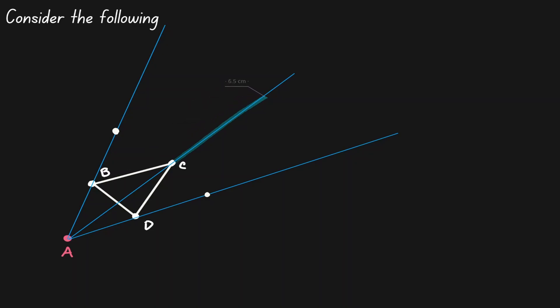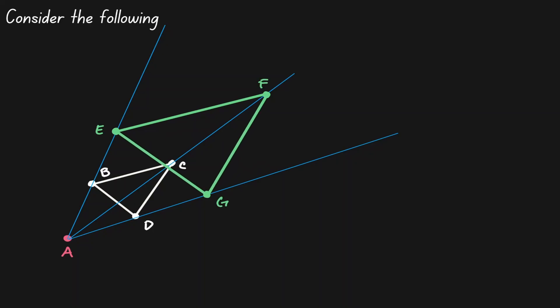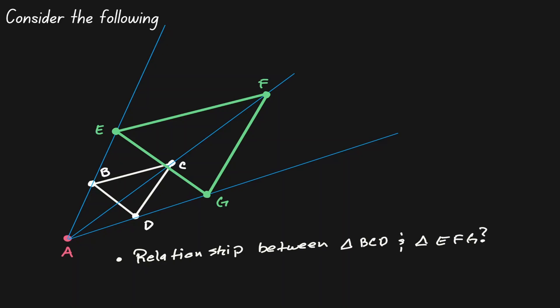Let's change the color of the coordinate points that we have just defined. Now let's connect those points and give it a name. Is there any relationship between the two triangles that we have just defined? Well, we can say that the green triangle is two times as large as the white triangle.